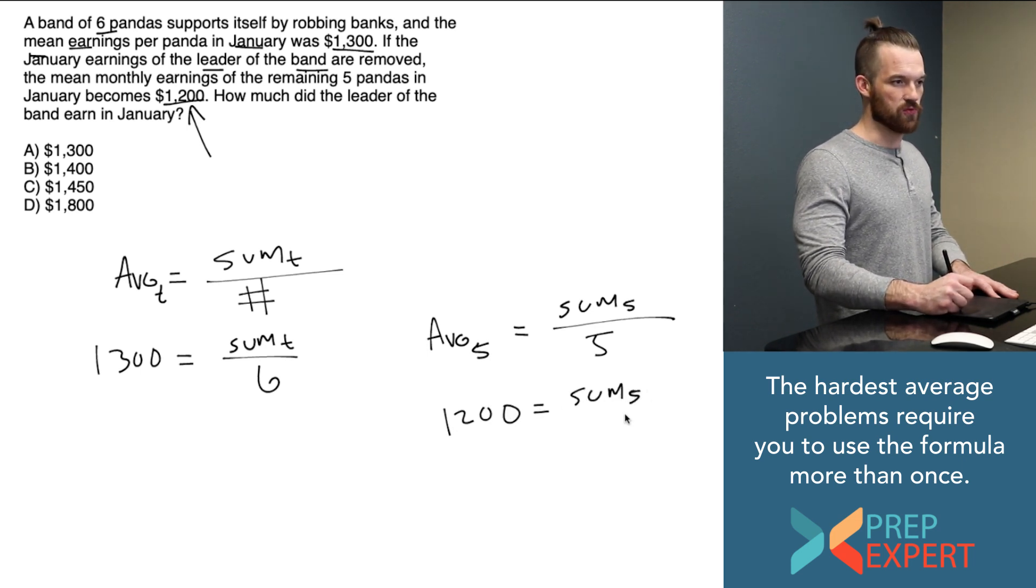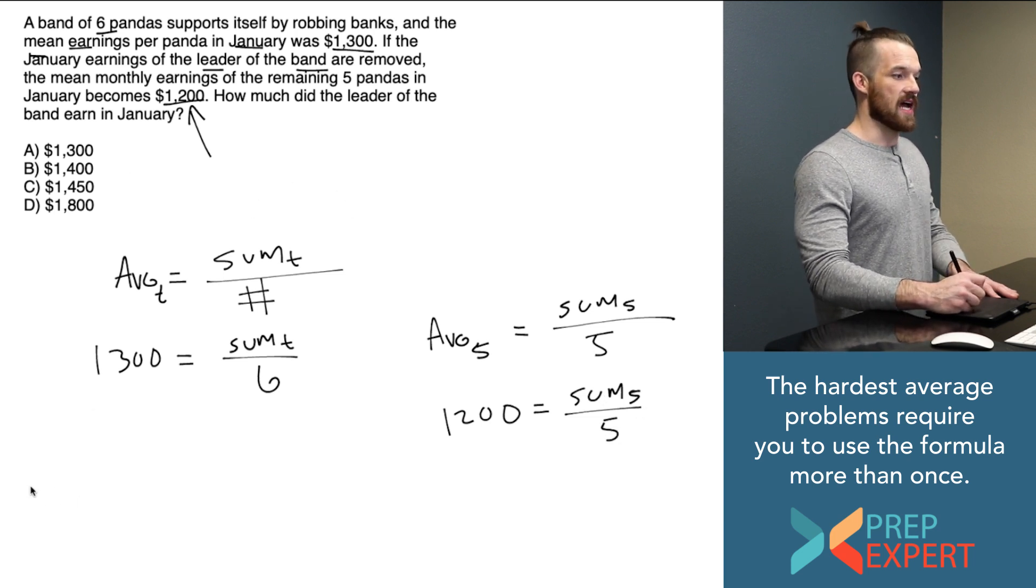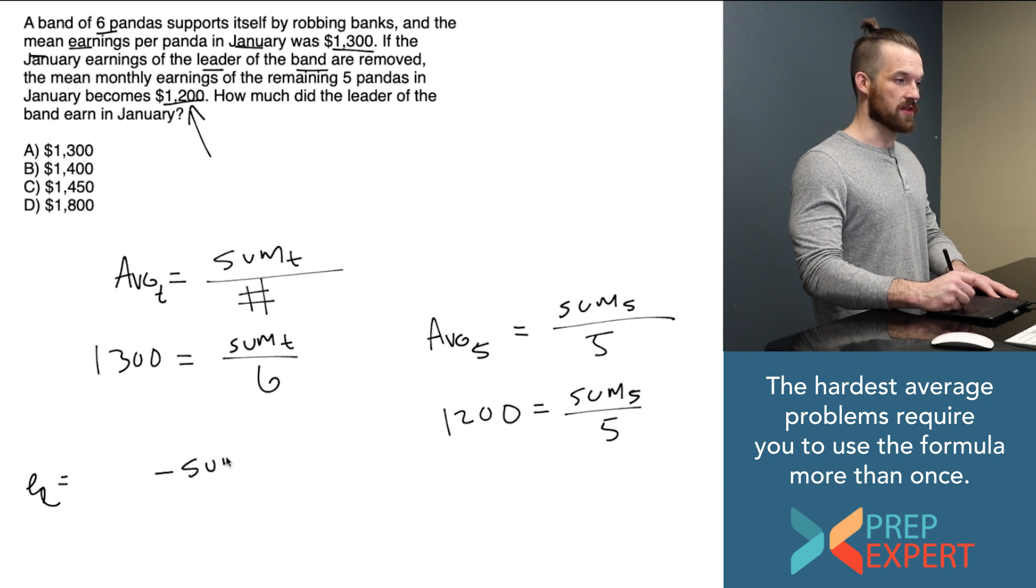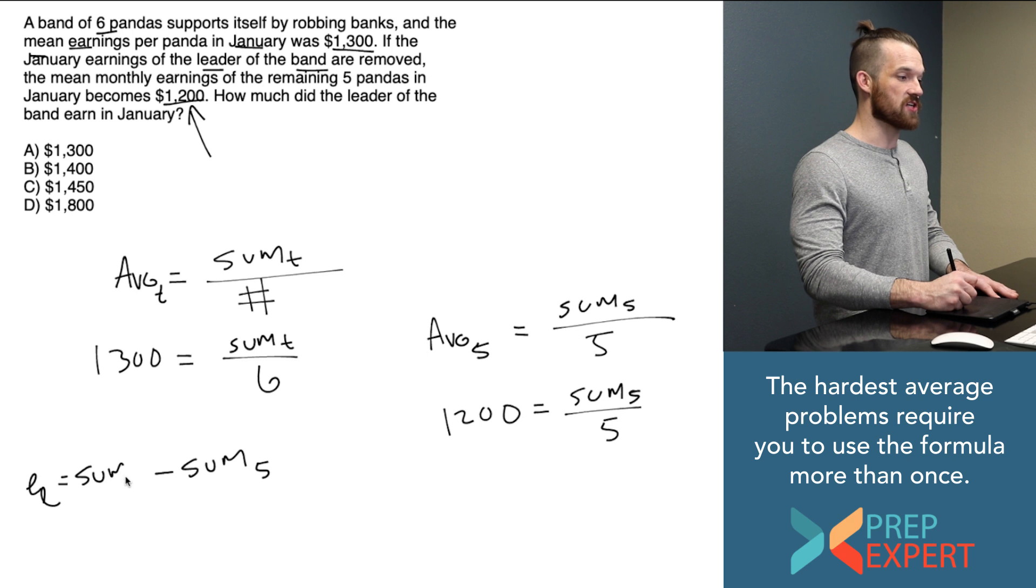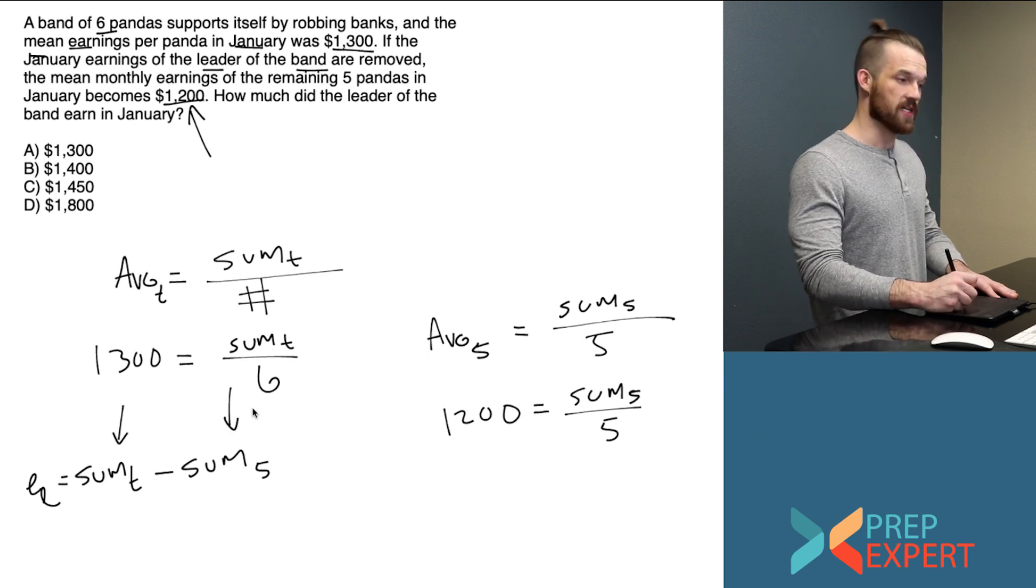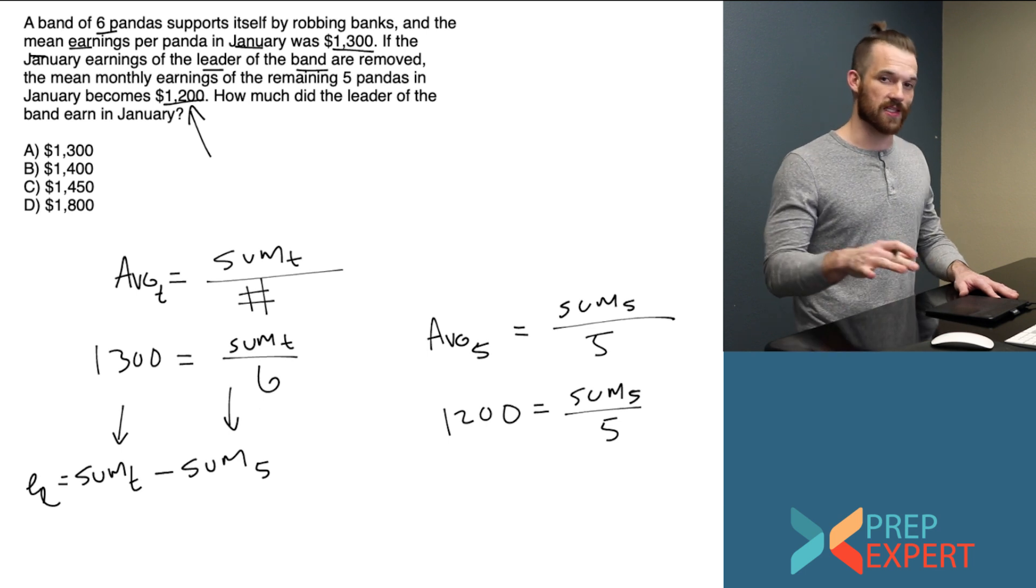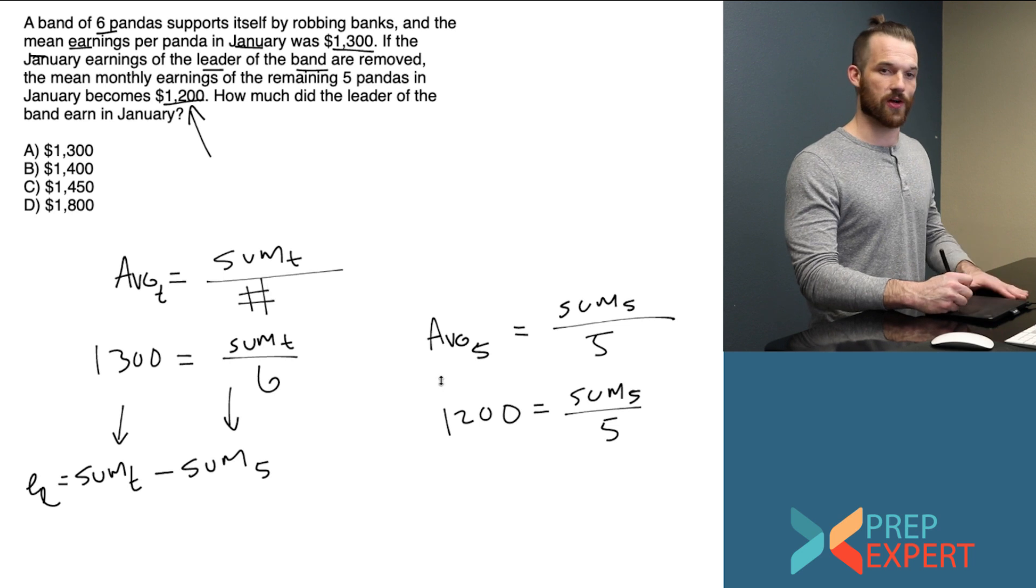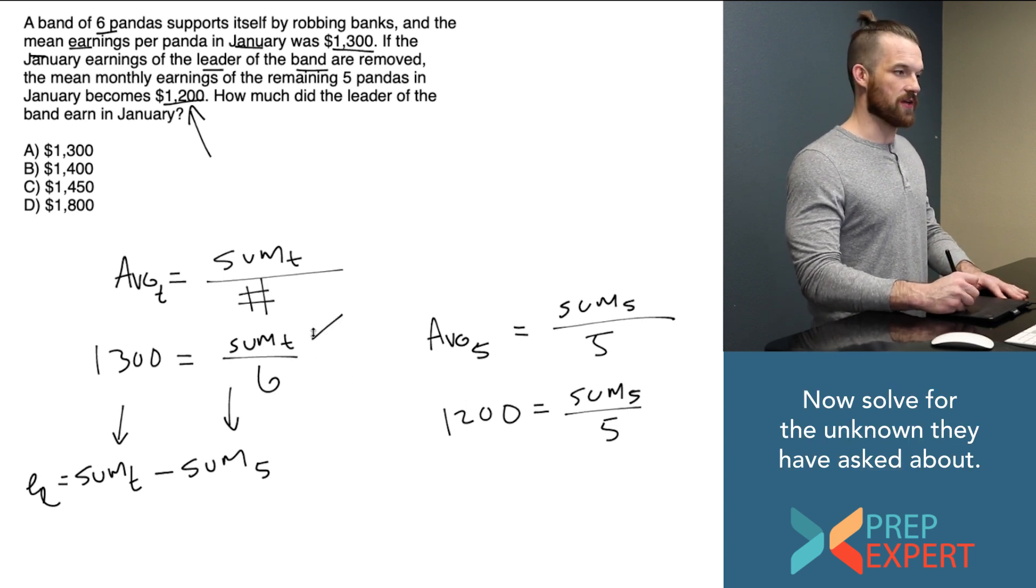How do we use that to find the earnings of the leader? Well, I think that the leader's earnings, we'll call that E sub-L, the earnings of the leader. I think that the leader's earnings can be found by subtracting the sum of the five pandas who aren't the leader from the sum of everybody. In other words, if this is the sum of all the pandas and this is the sum of all the pandas without the leader, then subtracting sum five from sum T will tell us how much the leader earned. And we can find both those values.